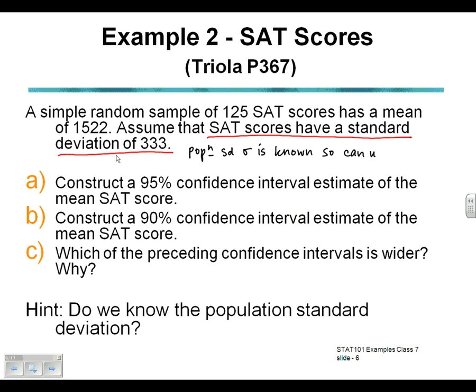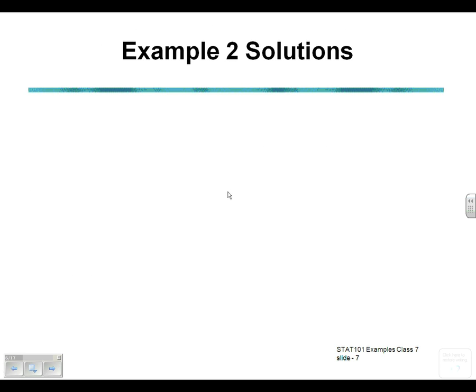We're looking at a sample of 125 with a mean of 1522. We're asked to find confidence intervals — we need a 95% confidence interval and a 90% confidence interval, and we're considering which of those is the widest. Because we know the population standard deviation, we can use our confidence interval with a z-score. So we write down: sample size n=125, x-bar=1522, and sigma=333.